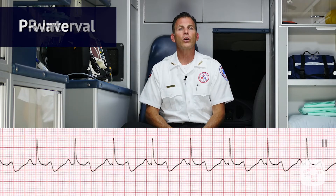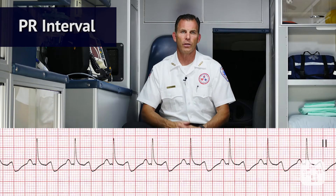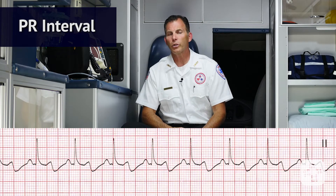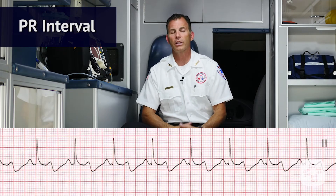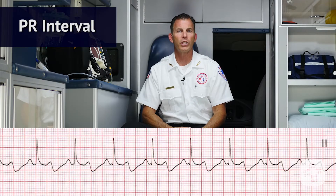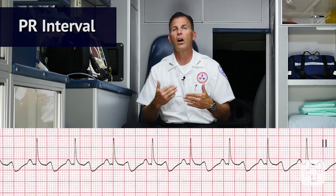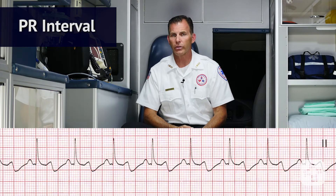Now we want to look at the PR interval for this ECG. Is the PR interval normal, meaning less than 0.20 seconds? The answer is yes, because the PR interval is contained within one large box, which equals 0.20 seconds, so the PR interval is normal. Is the PR interval constant? And the answer is yes.